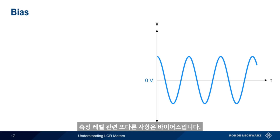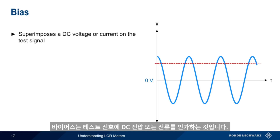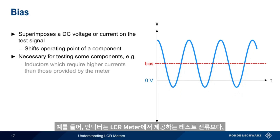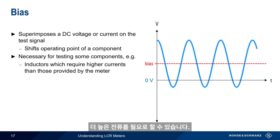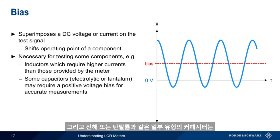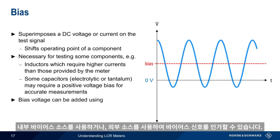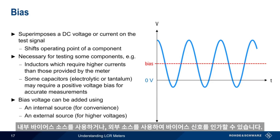Bias is another aspect of measurement level. Biasing superimposes a DC voltage or current on the test signal, and can be used to shift the operating point of some types of components when necessary for accurate measurements. For example, inductors may require a higher current than the test current provided by the meter, and some types of capacitors — such as electrolytic or tantalum — may require a positively biased voltage for accurate measurements. LCR meters therefore typically allow bias to be added using either an internal bias source or an external source for cases where higher bias voltages are required.